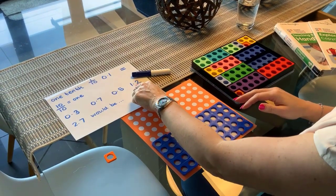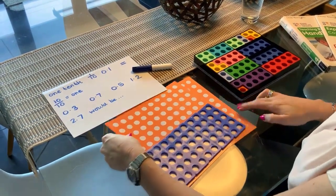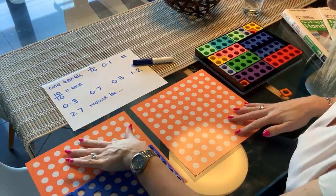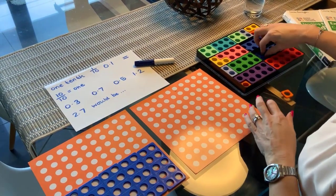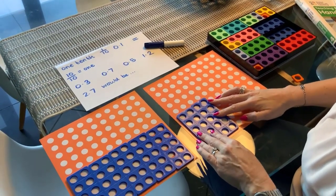Then we would start to think about whole ones and decimals. So what would one point two look like? So very carefully, we'd fill one of those. There's the one, and then the point two. The two tenths would be on here. So we'd cover one whole one and two tenths.